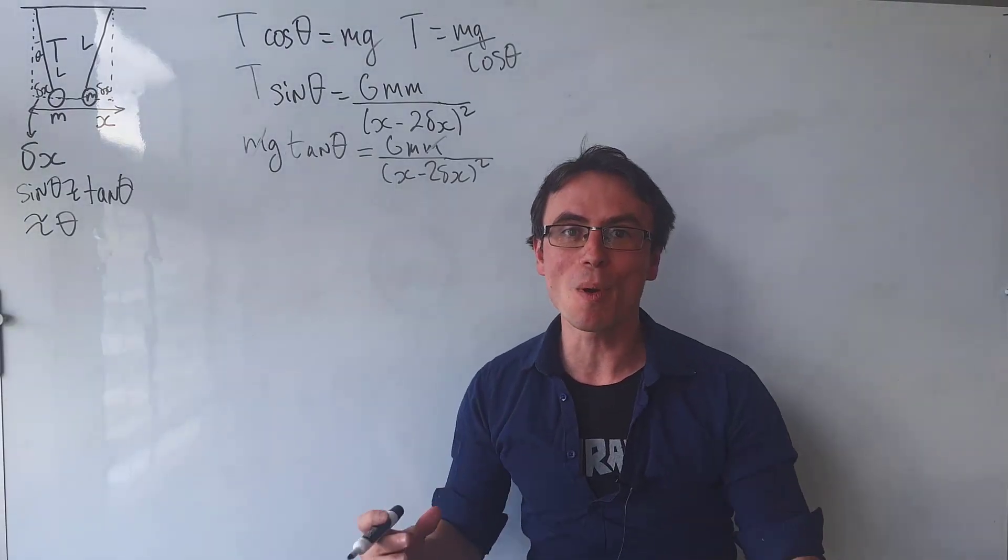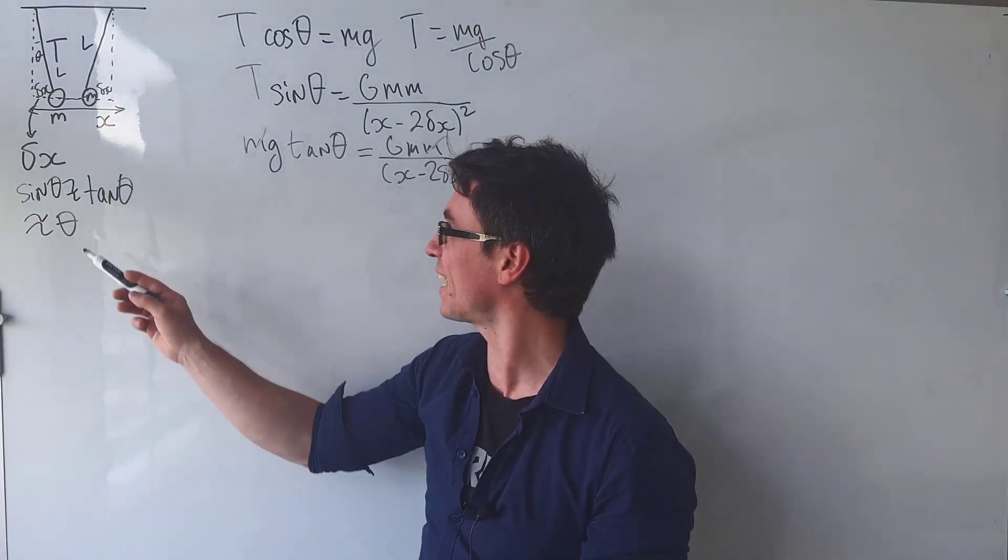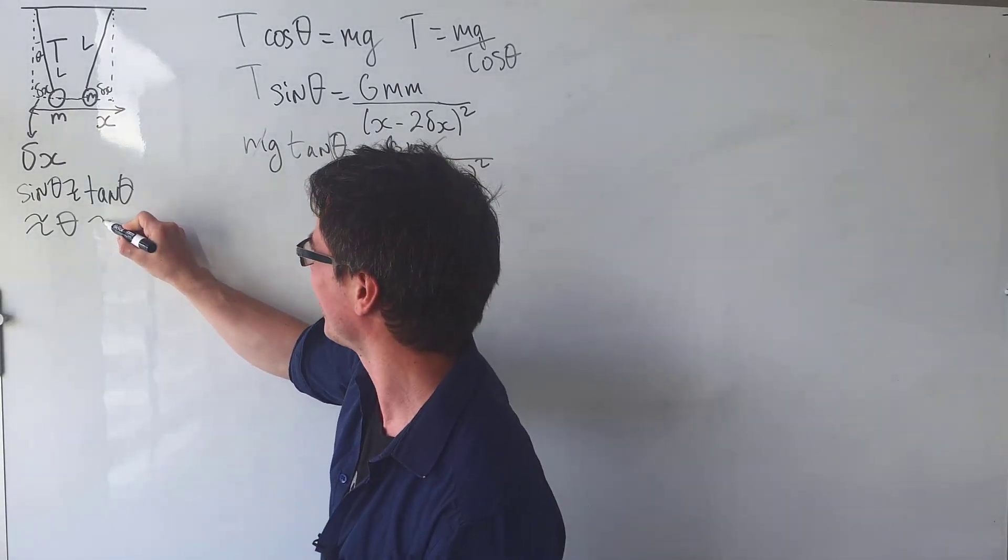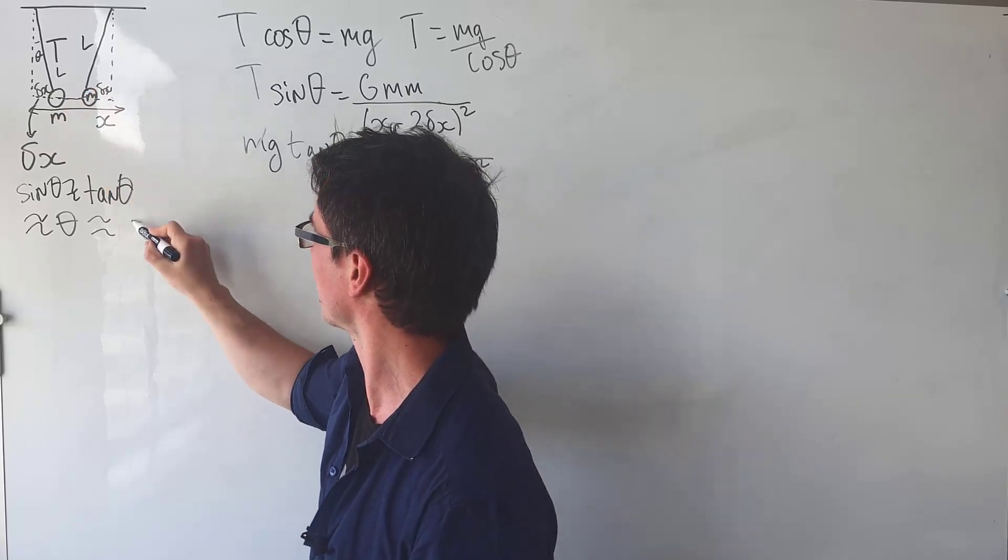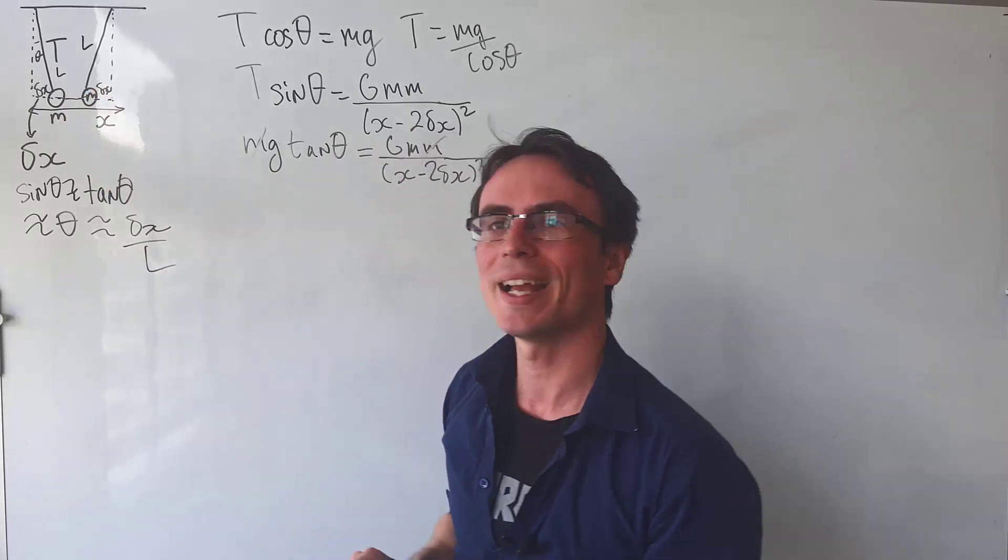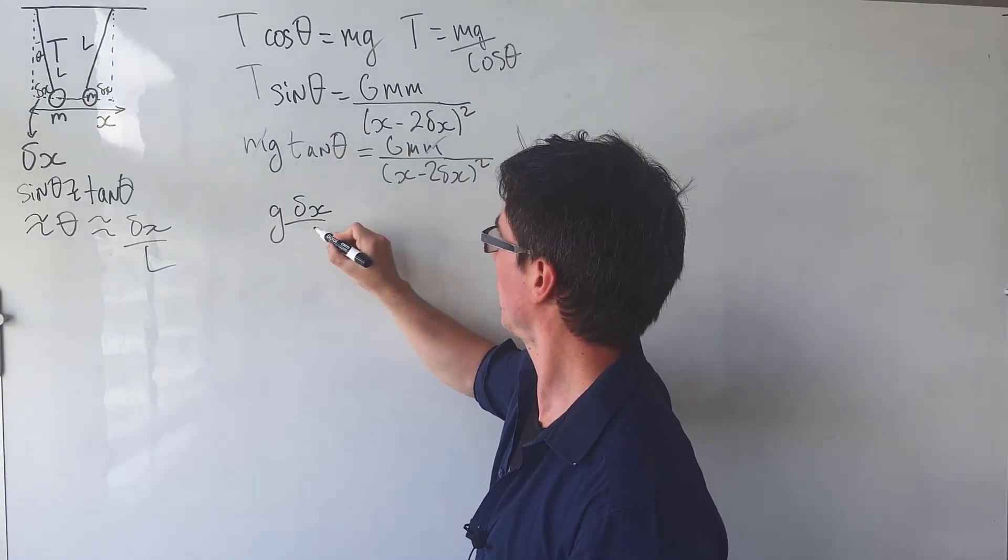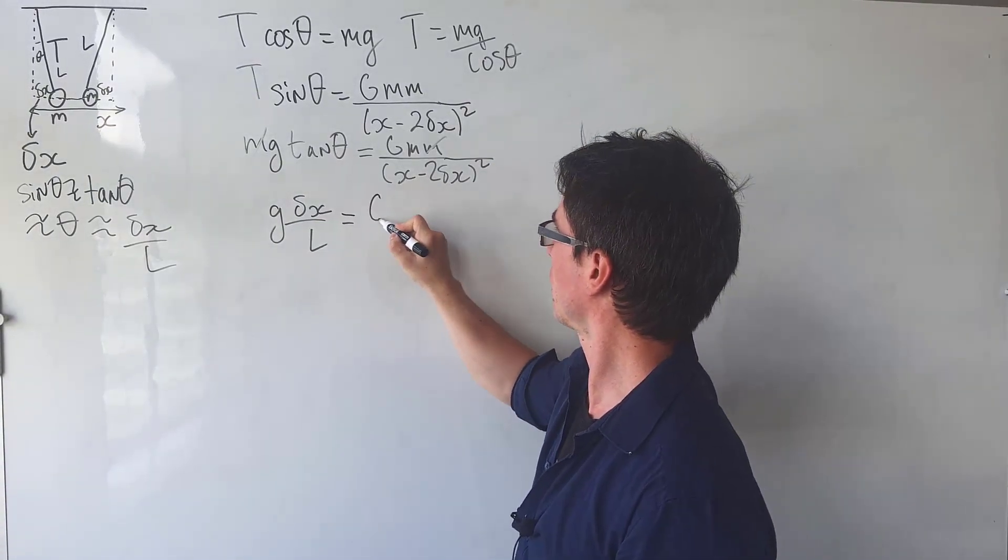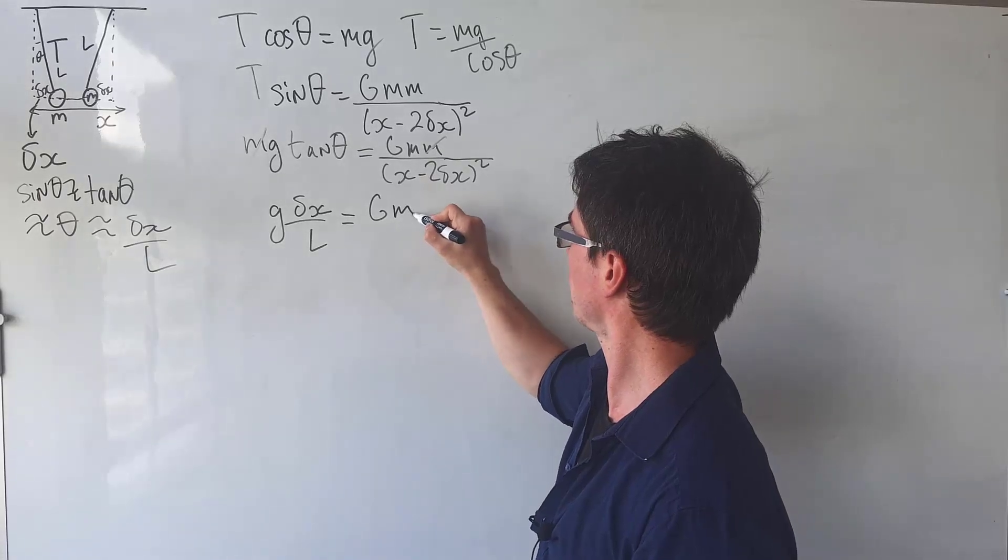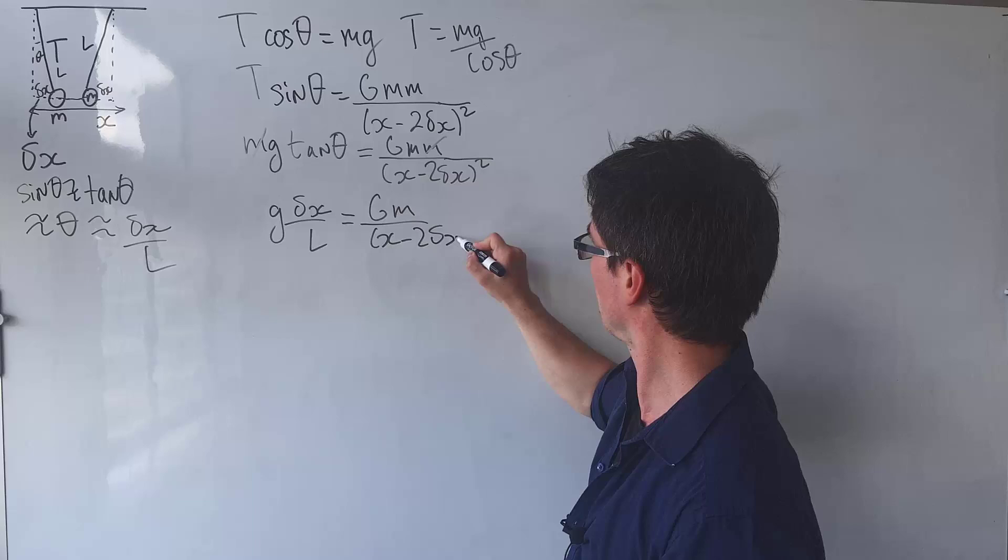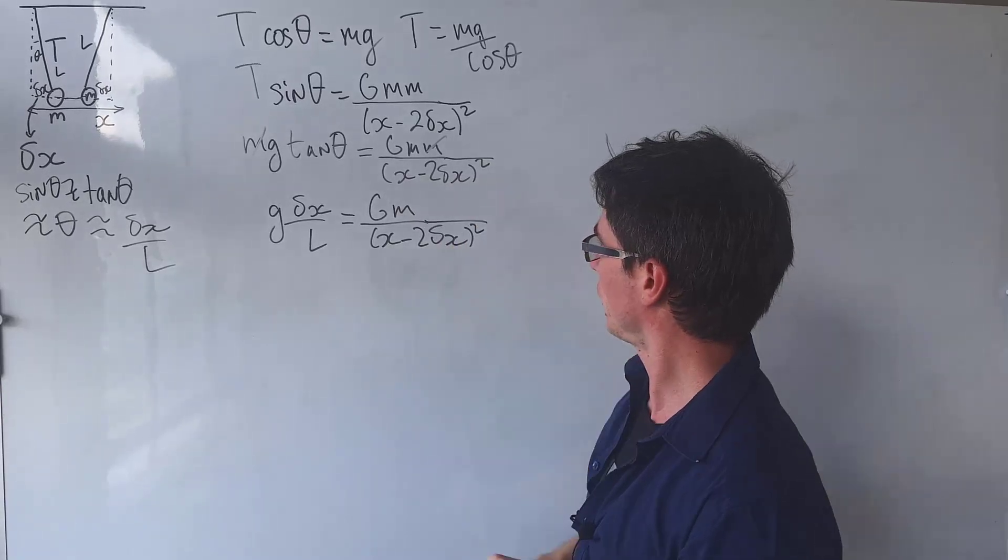And now we can use the small angle approximation that sine theta is about equal to tan theta, which is about equal to theta, which in this case will be approximately equal to delta x over l. So we get the g times delta x over l will be equal to the gravitational constant times gm over x minus 2 delta x, all of this squared.